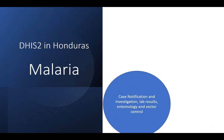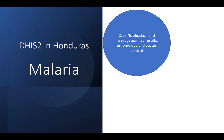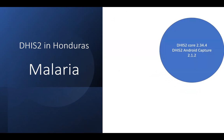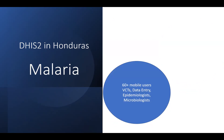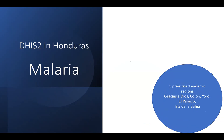In the context of malaria, we have case notification and investigation forms — this is a case-based module — and we also have the lab results. We are working with the Ministry of Health to have the entomology and vector control modules in the DHIS2 implementation as well. Right now we are on DHIS2 core version 2.34 and the DHIS2 Android application is deployed with the 2.12 version. We are working with 60 plus mobile users including data entry for epidemiologists and microbiologists, prioritizing malaria epidemic regions in the country.